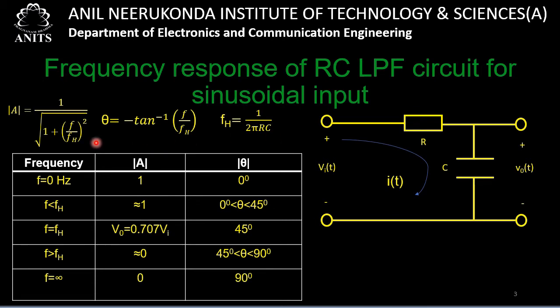The phase angle θ is given as −tan⁻¹(f/fH), where the minus sign denotes that the output voltage is lagging the input voltage. We also considered several values of frequency for which we computed the gain and angle, so that we could plot the magnitude response and phase response.